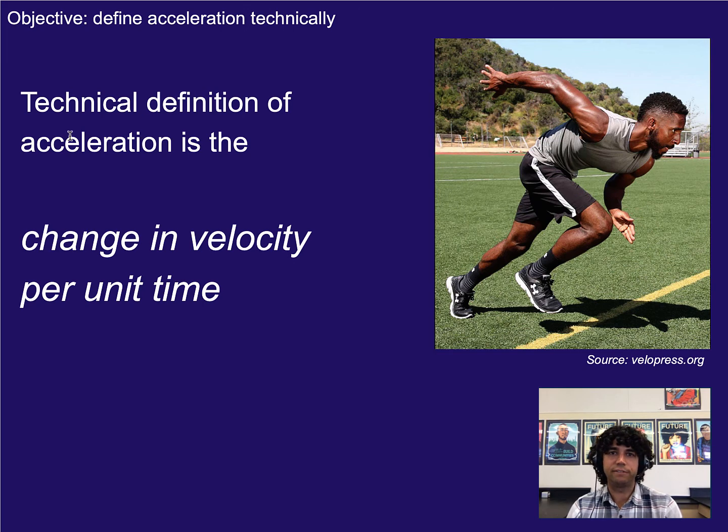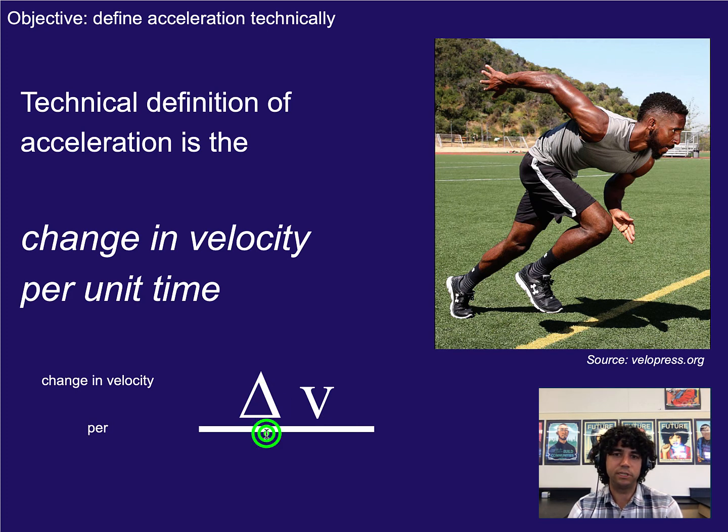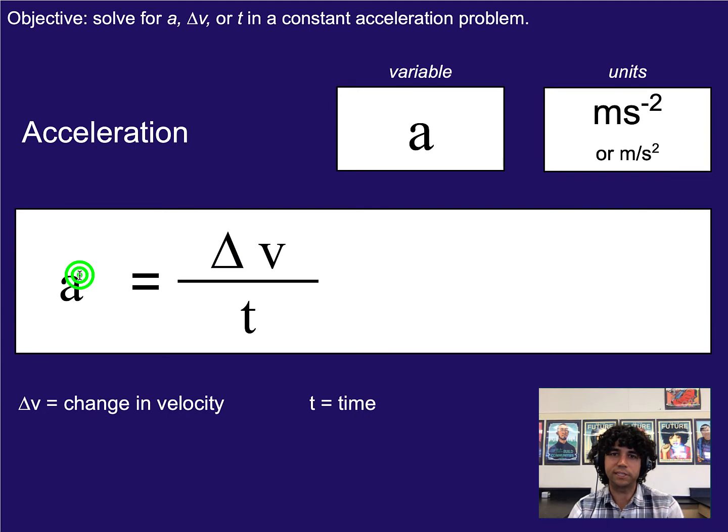Let's talk about the technical definition. I've already said it once or twice, but let's go over it officially. Acceleration by definition is the change in velocity per unit time, how much the velocity changes each second or each minute or each hour. Just by that definition alone, if you could interpret mathematically, what that would look like is change in velocity, or the delta or triangle symbol here means change, per means a fraction bar or division symbol, and time would be on the bottom. That basically gives us how we would calculate acceleration, namely acceleration equals change in velocity divided by time.